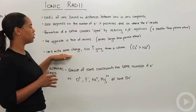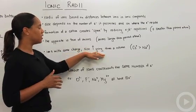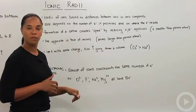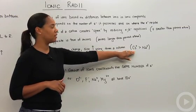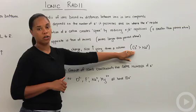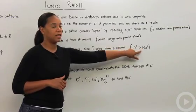So ions with the same charge, their size increases going down a column. So if we take a group one element, say we're comparing cesium plus and sodium plus, cesium is going to have a larger ionic radius than does sodium.